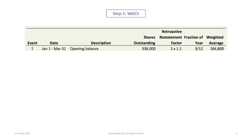The first step is to calculate the weighted average common shares. There are different ways to do it, but the method shown here is the easiest for most students to follow. It uses a table showing the sequence of events — the dates, a description of what happens, the number of shares outstanding, a column for the retroactive restatement factor relating to splits and stock dividends, the fraction of the year shares are outstanding, and the resulting weighted average.